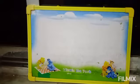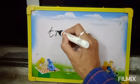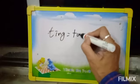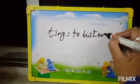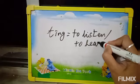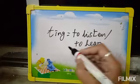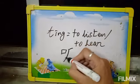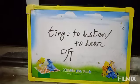The next character is Thing. Thing means to listen or to hear. I am showing you how to draw this character. This is the character Thing.